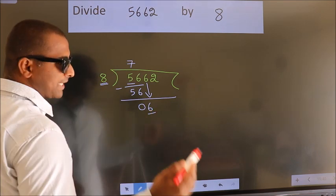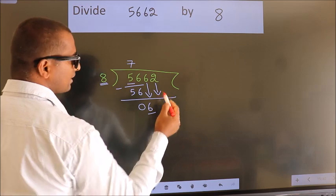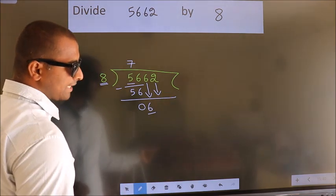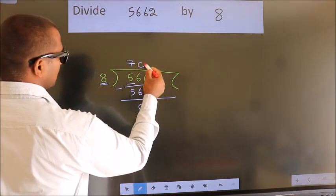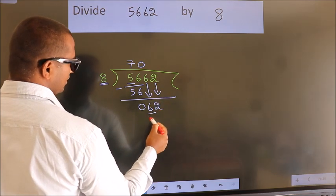So we should bring down the second number. And the rule to bring down the second number is put 0 here. Then only we can bring down this number. So 62.